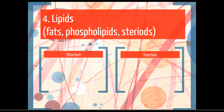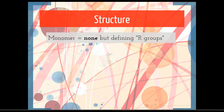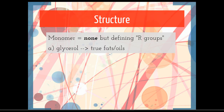Our last kind of biomolecule are the lipids, and this includes the fats, the phospholipids, and steroids. The structure is a little bit different for these guys. They don't have a true monomer. They don't have a set repeating unit, but they do have defining R groups. The different kinds of lipids are defined by some kind of attached group.